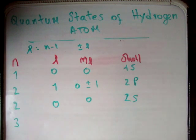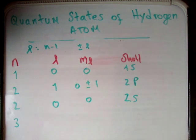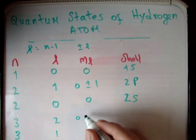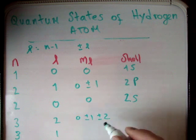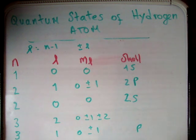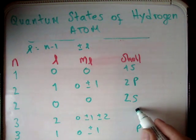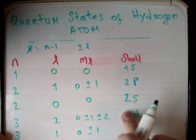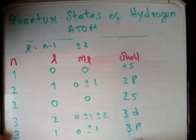For N equals 3, L goes up to a maximum of 2, so L can be 2, 1, or 0. M sub L can be 0, plus or minus 1, or plus or minus 2 for L=2; 0 or plus or minus 1 for L=1; and just 0 for L=0. L=0 gives the 3S shell, L=1 gives 3P, and L=2 gives the 3D shell.